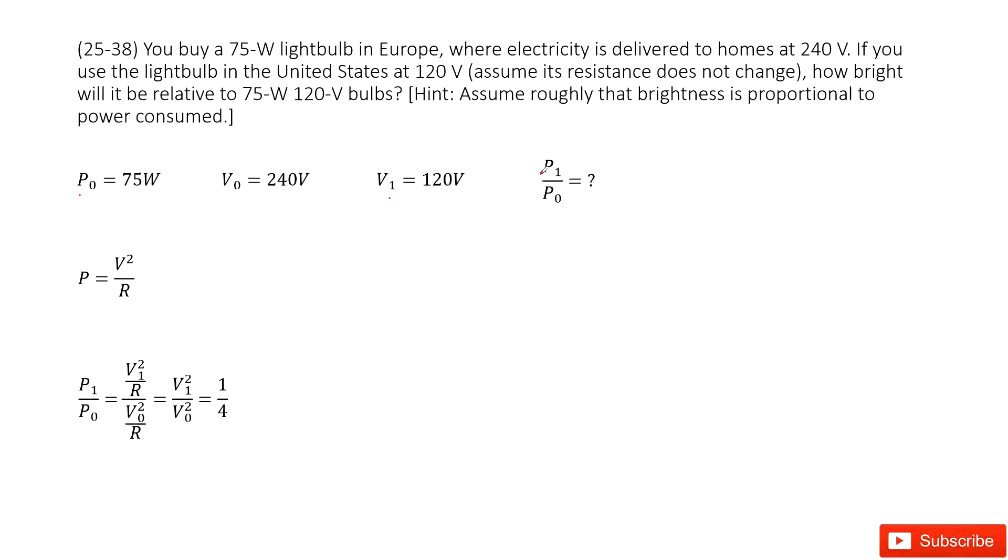So it looks like we just need to find P₁ over P₂. Oh, sorry, P₁ over P₀. This is the ratio of the power, United States over Europe, right?